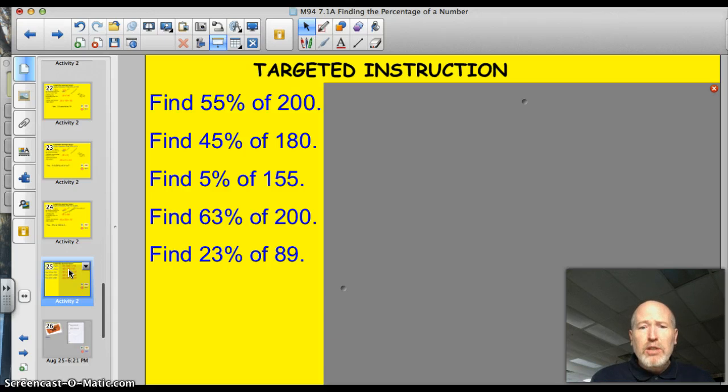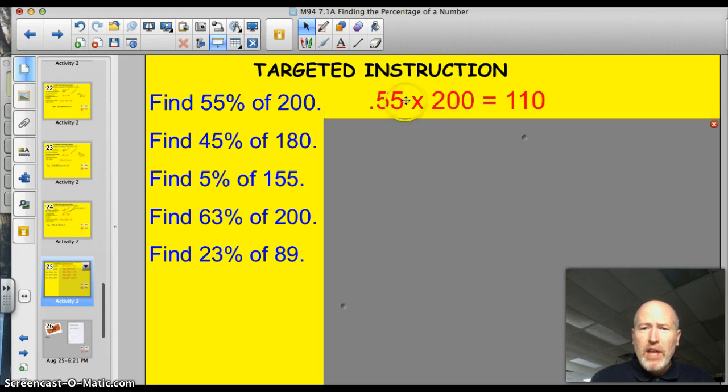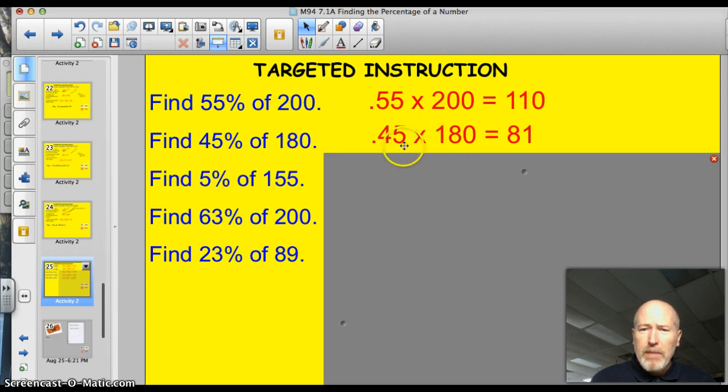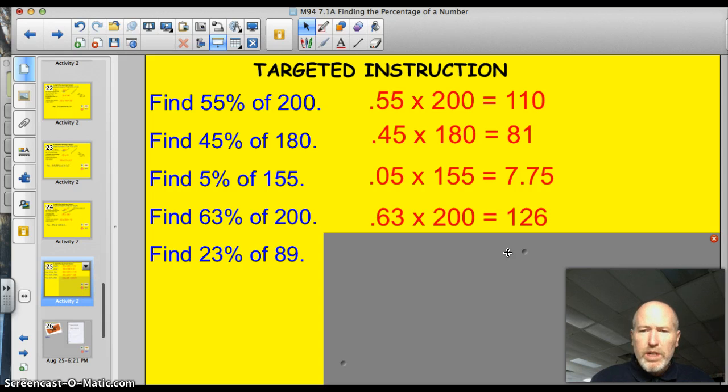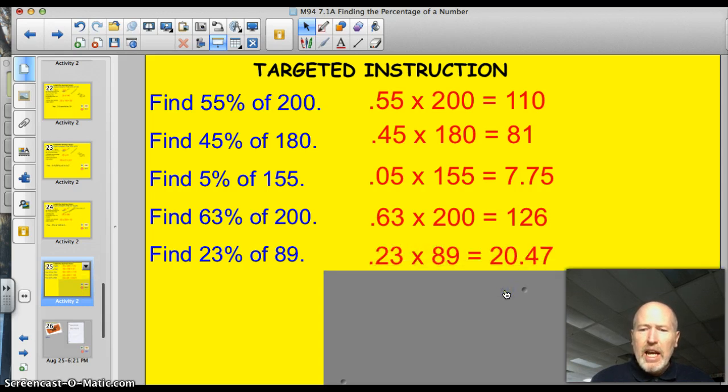All right, here are 5 problems I'd like you to try on your own. Go ahead and pause and grab your calculator and try them. Go. I'm back. Let's see how you did. All right, the first one. 55% of 200. Well, 0.55. Move that decimal. 0.55 times 200 is 110. 45% of 180. Again, divide by 100. Move the decimal two spots to the left. You get 81. 5% of 155, 7.75. 63% of 200 is 126. 23% of 89, 20.47. How you doing? You get it?